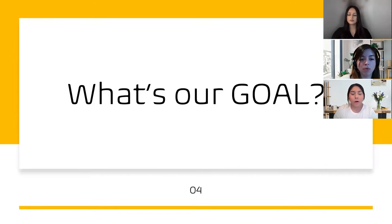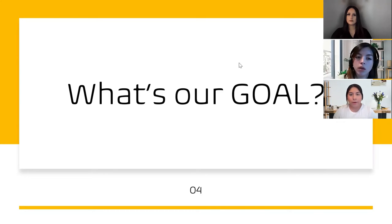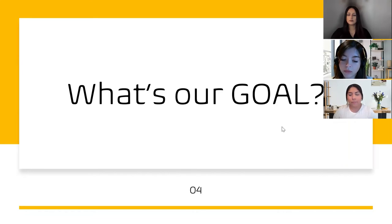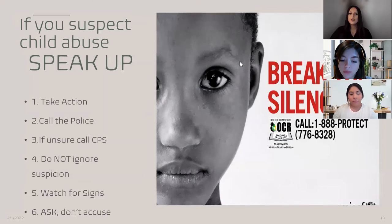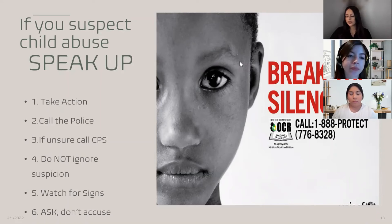Our goal is to prevent child abuse with the strategies mentioned. We also want to bring awareness to the community, parents, school, and children in every social environmental area. If you suspect child abuse, speak up. Here are some things you can do: take action, call the police, if unsure call CPS, do not ignore suspicion, watch for signs, and ask — don't accuse. Children who are abused are always giving away hints. Please don't ignore these hints.